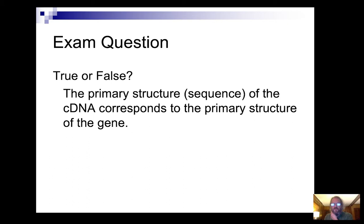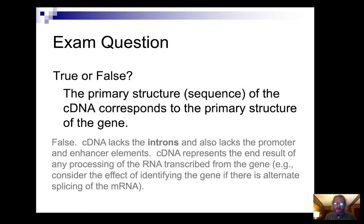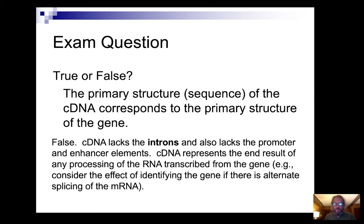Quick exam question: True or false? The primary structure — the sequence — of the cDNA corresponds to the primary structure of the gene. If we're talking about a eukaryote gene, cDNA is going to lack the introns. It will also lack the promoter, enhancer elements, and regulatory sequences. So the cDNA represents the end result of any processing of the RNA transcription — it would be false for eukaryote genes. In what sense would it be true? For prokaryote genes — thumbs up.